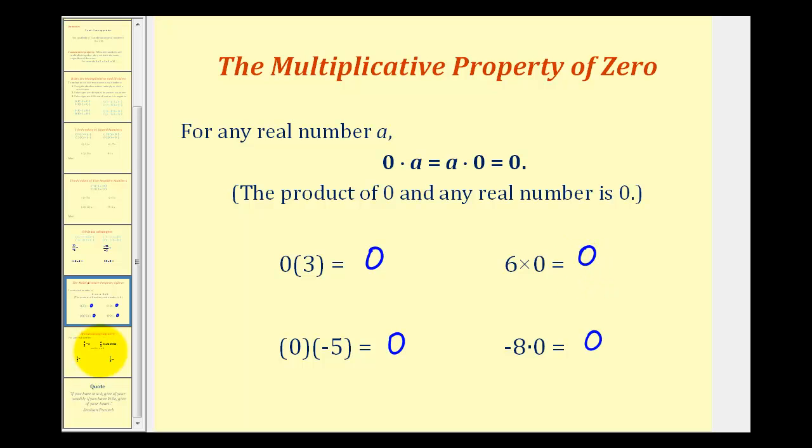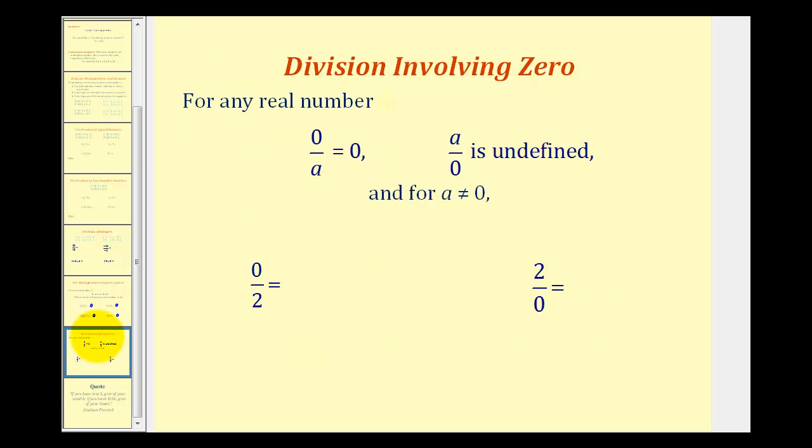Now let's talk about division involving zero. For any real number a, zero divided by a is equal to zero. But a divided by zero is undefined. So division by zero is undefined. And the only special case here is that a cannot equal zero, meaning we can't have zero over zero or zero divided by zero.